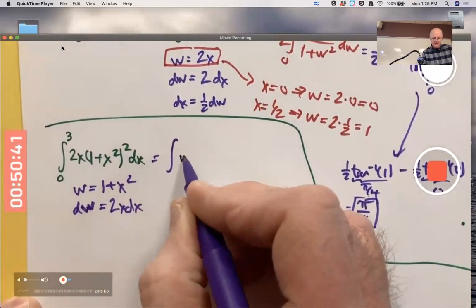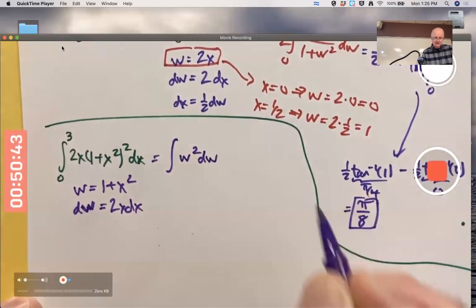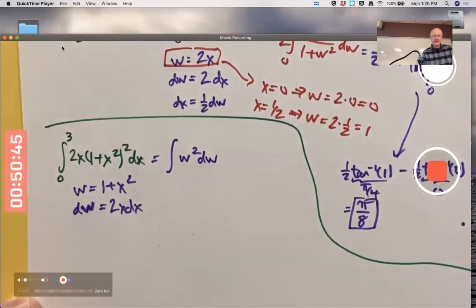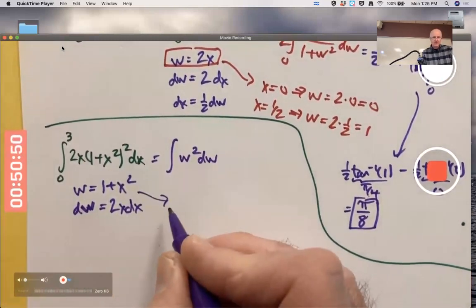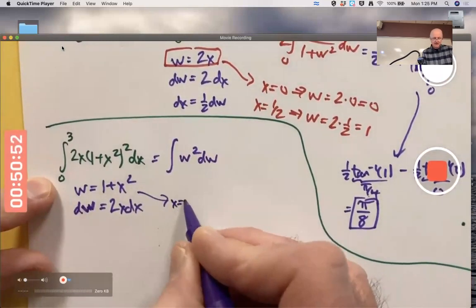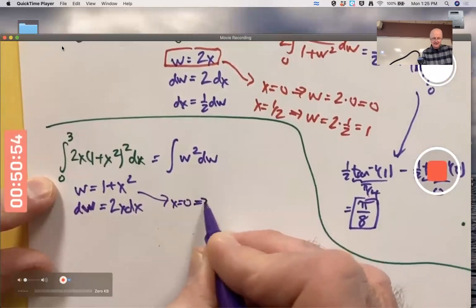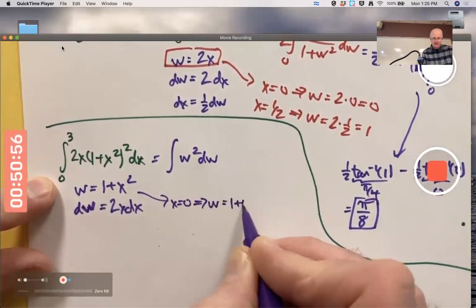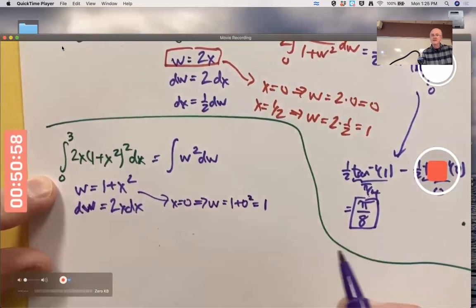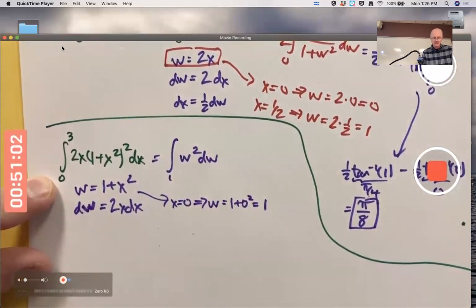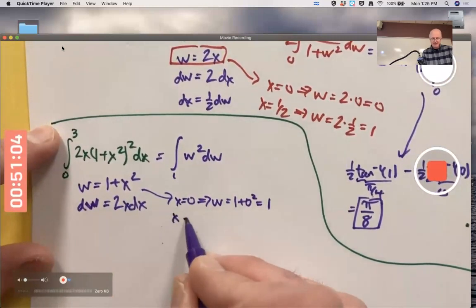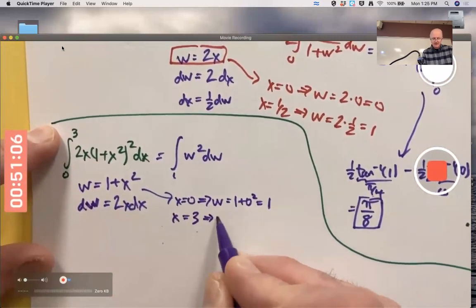The substitution is w = 1+x², dw = 2x dx. So you get the integral of w² dw - the 2x and the dx combined to give you the dw. Change limits of integration though. When x is the lower limit 0, that implies w = 1+0² = 1. The lower limit becomes 1, not 0.